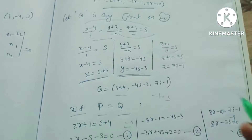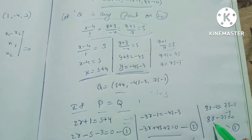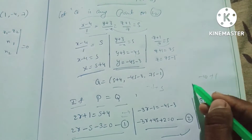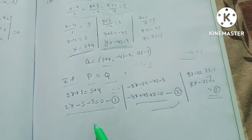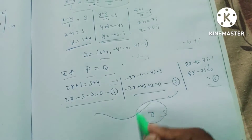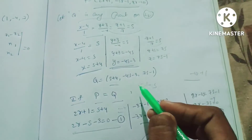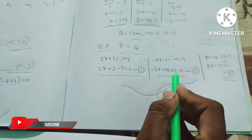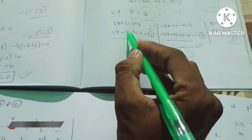Equating z-coordinates: 8R−10 = 7S−1, so 8R − 7S = 9. Equation 3: 8R − 7S = 9. Solving equations 1 and 2 simultaneously using Cramer's rule or elimination to find values of R and S.